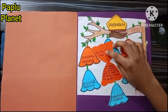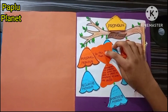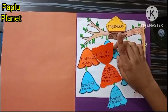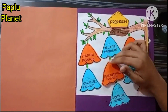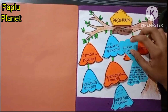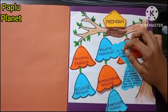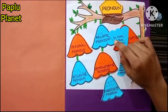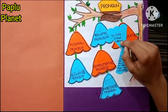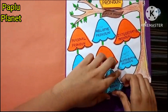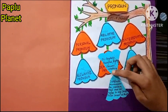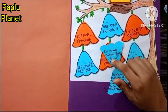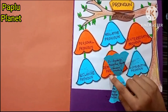Demonstrative pronoun: a demonstrative pronoun is a word used to point to something or someone specific. Example: this, that, these, those. Distributive pronoun: distributive pronouns are the pronouns which are used to refer to more than one noun separately. Example: each, either, and neither. Indefinite pronoun: indefinite pronouns are the pronouns that do not refer to any particular person or thing. Example: anybody, everyone, anything, someone, and something.